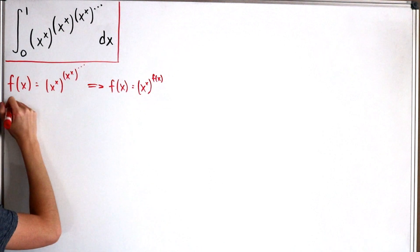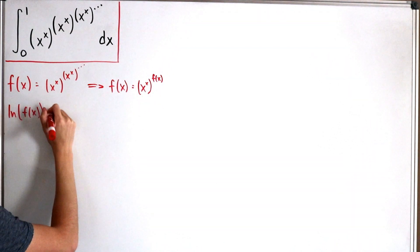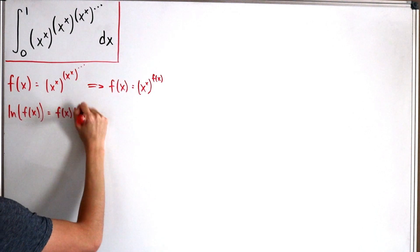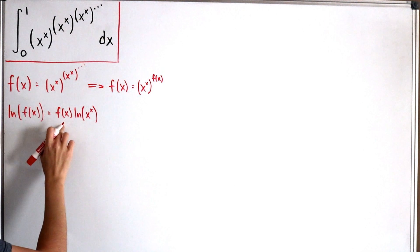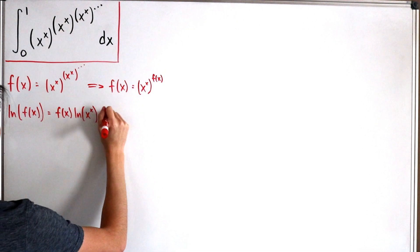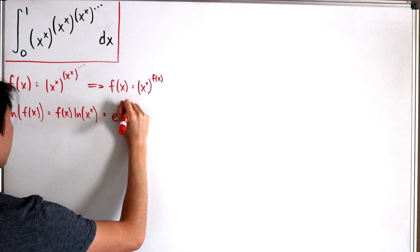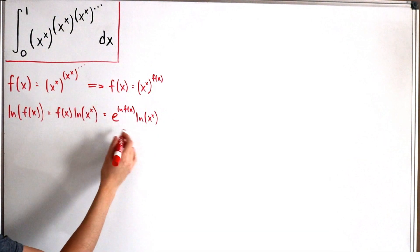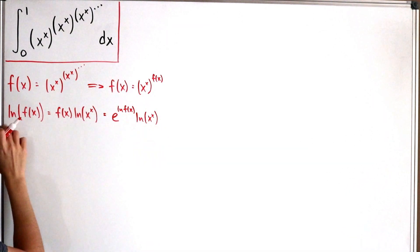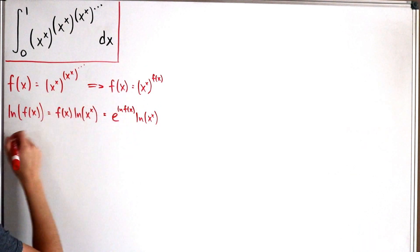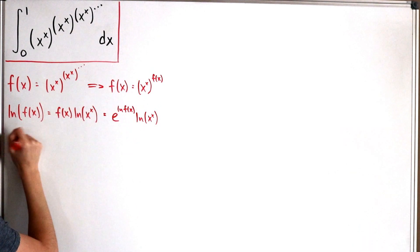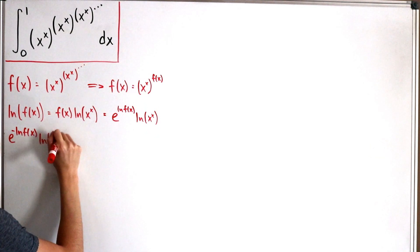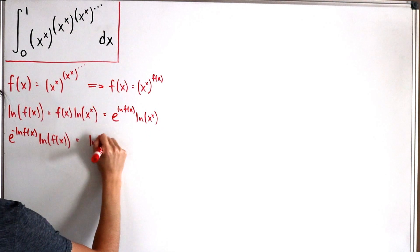Now let's take the natural log of both sides: ln(f(x)) equals f(x) times the natural log of x to the power x. We can rewrite f(x) as e to the ln(f(x)), so this becomes e to the ln(f(x)) multiplied by the natural log of x to the power x.